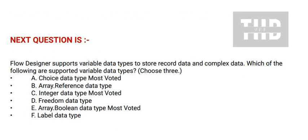Next question: Flow Designer supports variable data types to store record data and complex data. Which of the following are supported variable data types? Choose three options. Option A: Choice data type. Option B: Array reference data type. Option C: Integer data type. Option D: Freedom data type. Option E: Array Boolean data type. And Option F: Label data type.